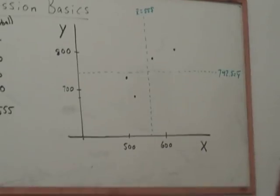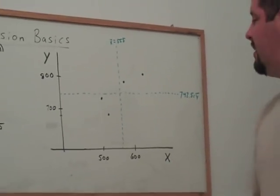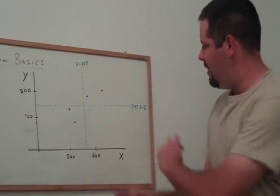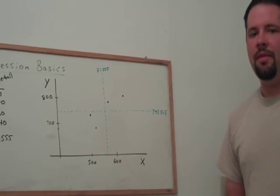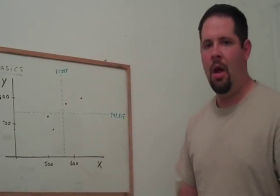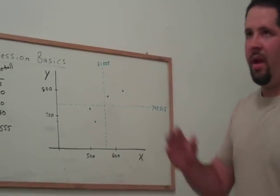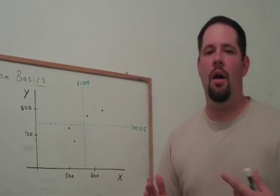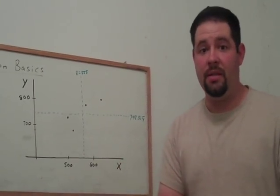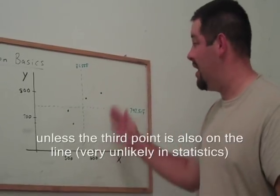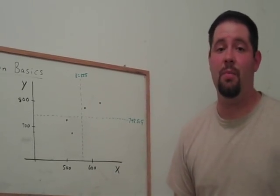And so, the whole idea, intuitively, is to find the line that is closest to these four points. Obviously, because we have a line, and a line can only connect two points, a straight line can only connect two points, we're not going to hit all of these points.